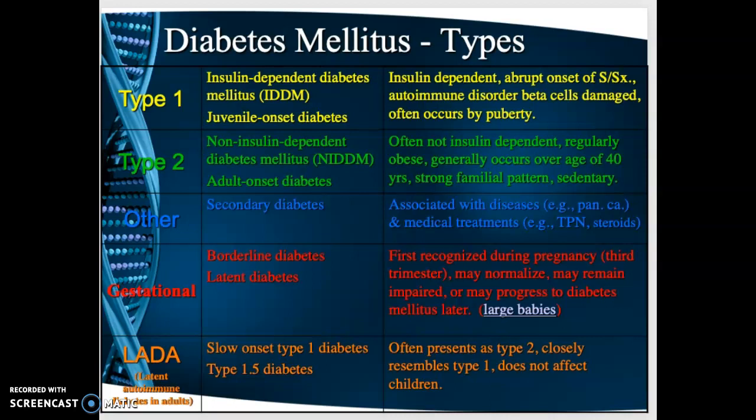Type 2 diabetes is very common. It's non-insulin-dependent diabetes mellitus — also called adult onset — usually occurring around age 40. The person often leads a sedentary lifestyle, doesn't watch what they eat, and doesn't get enough exercise. This person still produces insulin, but has insulin resistance — the receptor sites are not sensitive to the insulin produced, so blood sugar levels go up. Often this person is obese.